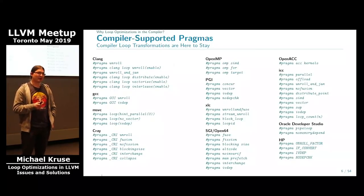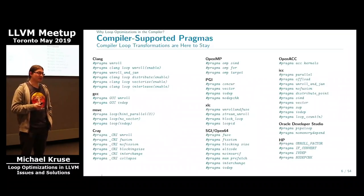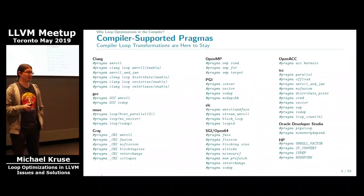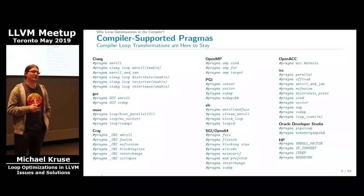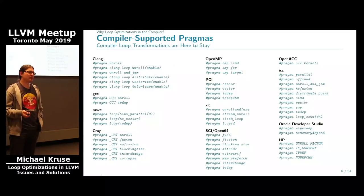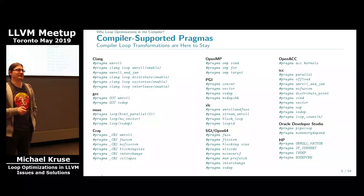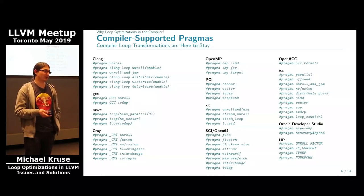Unroll is not the only one — there's a big collection of different pragma loop optimizations that different compilers support. Unfortunately, they are all different. So depending on whether you use Clang or GCC, you need different syntax. For instance, a lot of compilers support pragma unroll. In GCC 8, GCC also added such a pragma, but with a vendor prefix, so you can't compile the same code with different compilers — you'd need one version for each compiler.